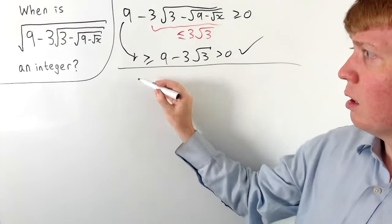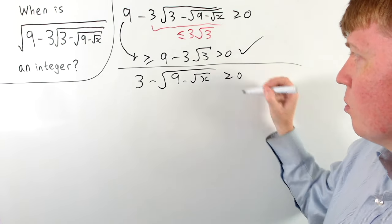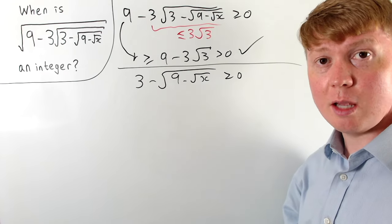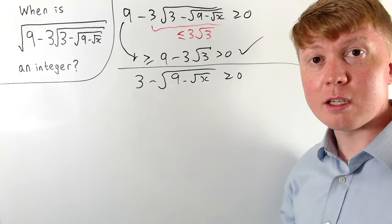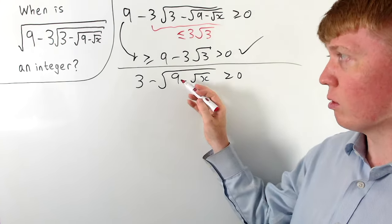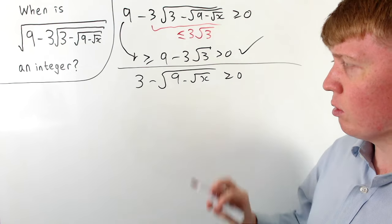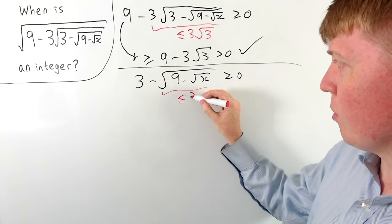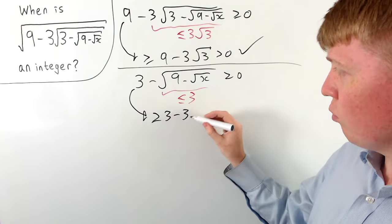Let's look at the next one. We need the expression inside here — three minus the square root of nine minus root x — to be greater than or equal to zero. We can use the same sort of argument: we're taking away the square root of nine minus something. The worst case is taking away the square root of nine by making x equal to zero, giving three minus the square root of nine. So we're taking away something at most three, meaning this expression is at least three minus three, which is zero. So this can never be negative and doesn't cause us any problems.